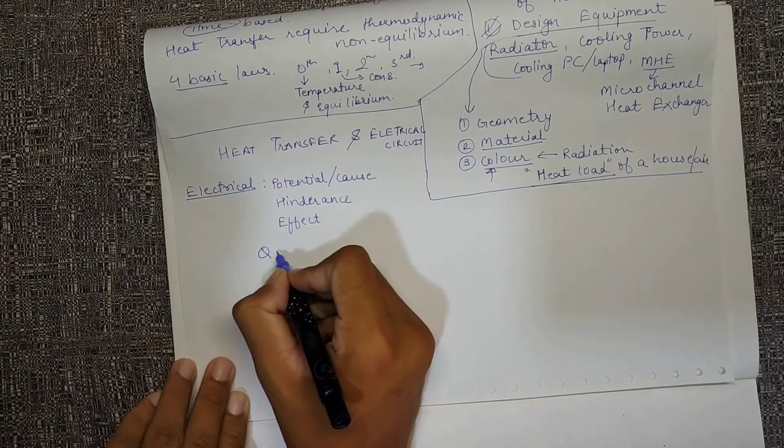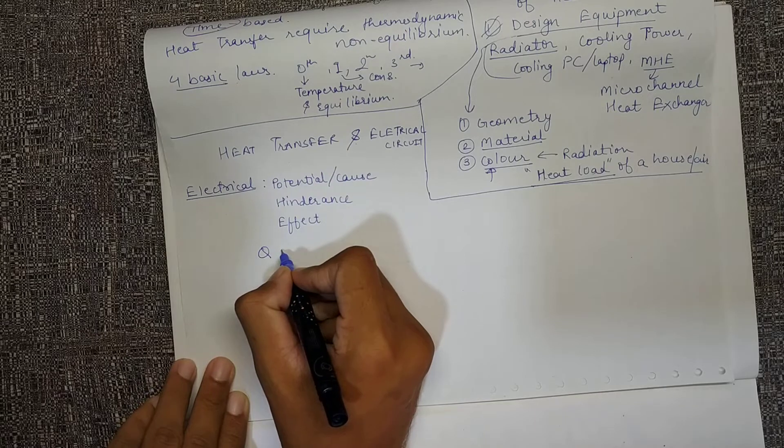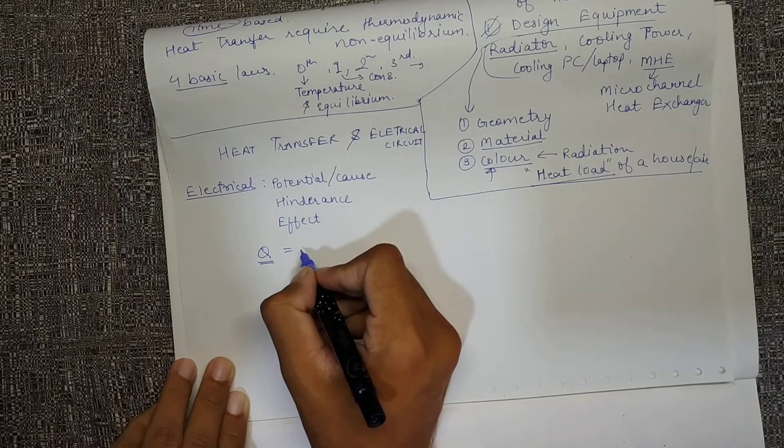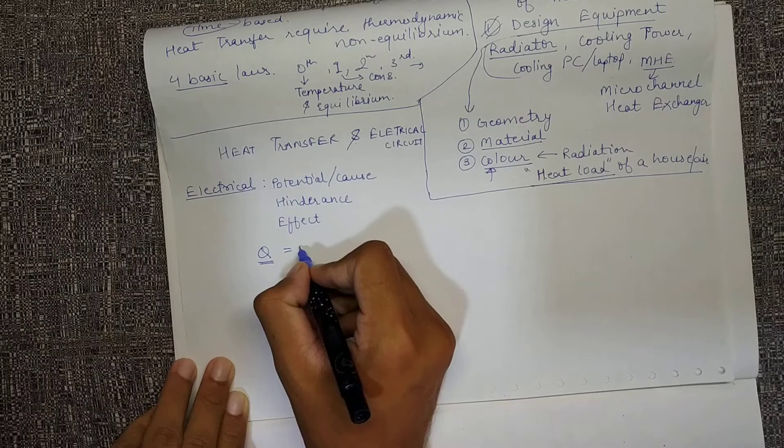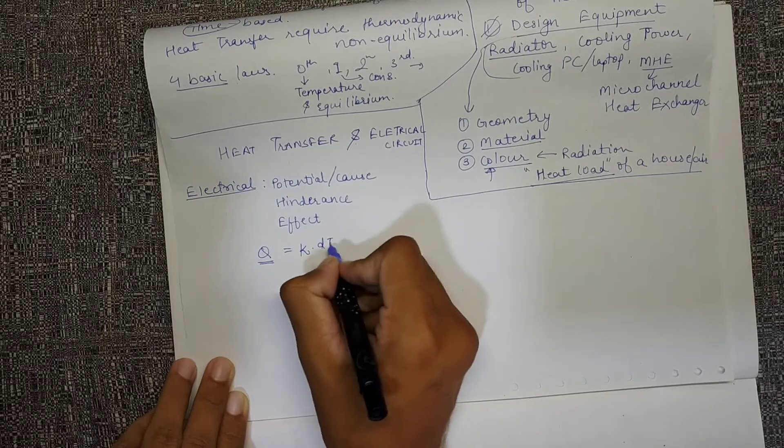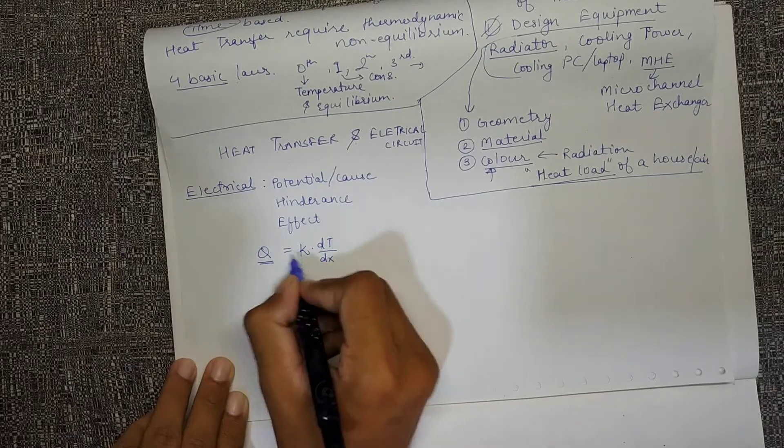We have heat involved, Q is involved, we have some type of resistance to it, and then we have dt by dx. I'll explain what this is.